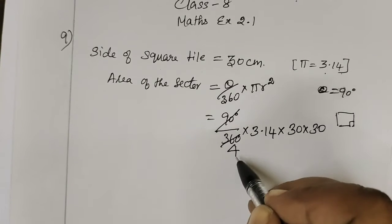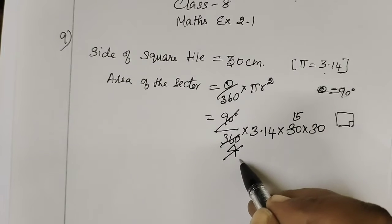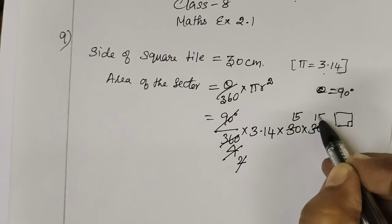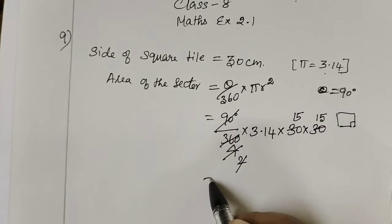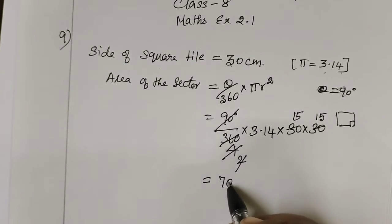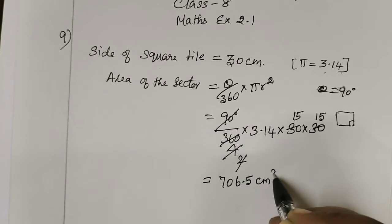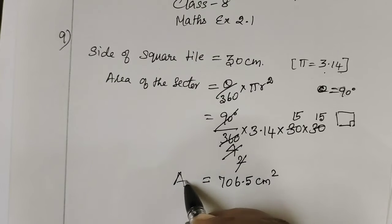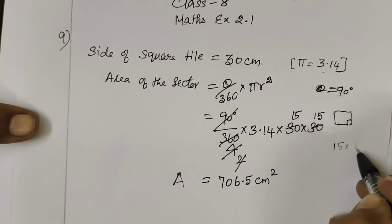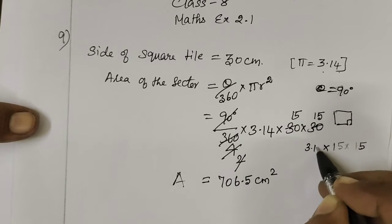Simplifying: 90 over 360 cancels to give one quarter, so we compute 15 into 15 into 3.14. This gives the answer 706.5 cm². This is the area of the sector.